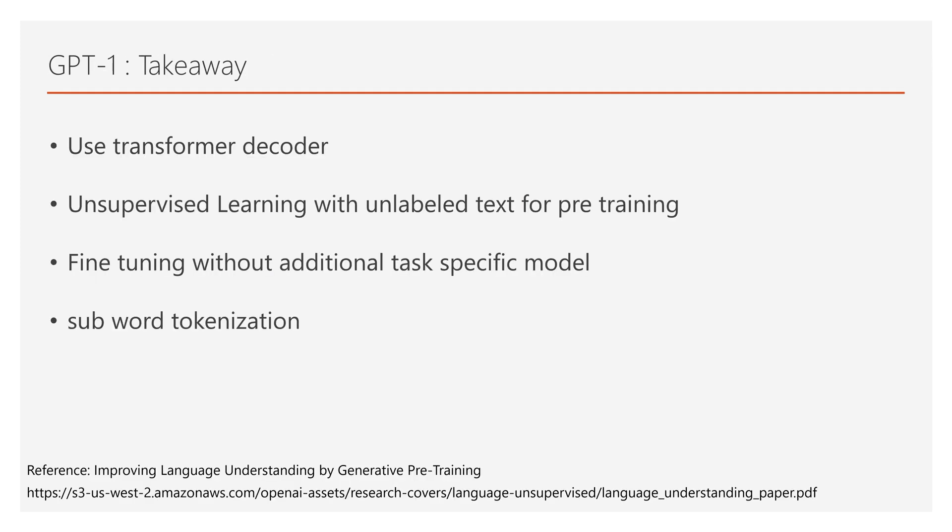This is it! Here are the most important takeaways. First, GPT-1 uses Transformer decoder design. Second, GPT-1's performance is based on language model training with a diverse large amount of unlabeled data. Third, GPT-1 can be fine-tuned for specific tasks without an additional task-specific model. Last but not least, GPT-1 uses subword tokenization called byte-pair encoding. All information is from the research paper noted in this slide. Thanks for watching — see you in the next video!